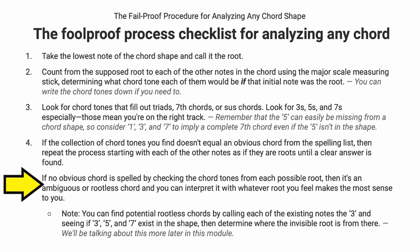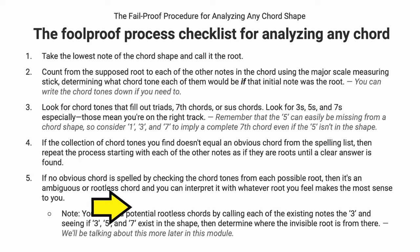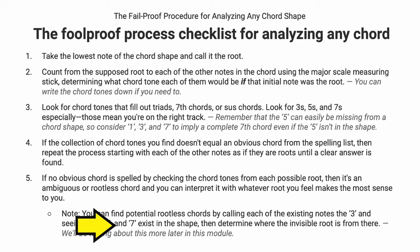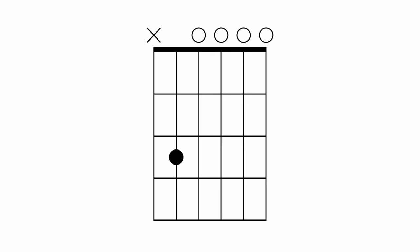If you've tried every possible note as the root and there's still nothing obvious, then it may be what I call an ambiguous chord or a rootless chord — meaning the root is not actually in the voicing. For rootless chords, you can do the same process by starting on the third and looking for three, five, and seven, then imagining where the missing root is. I have a video about rootless chords — I'll link to that in the description. All the prerequisite information is inside my chord theory series, also linked below.